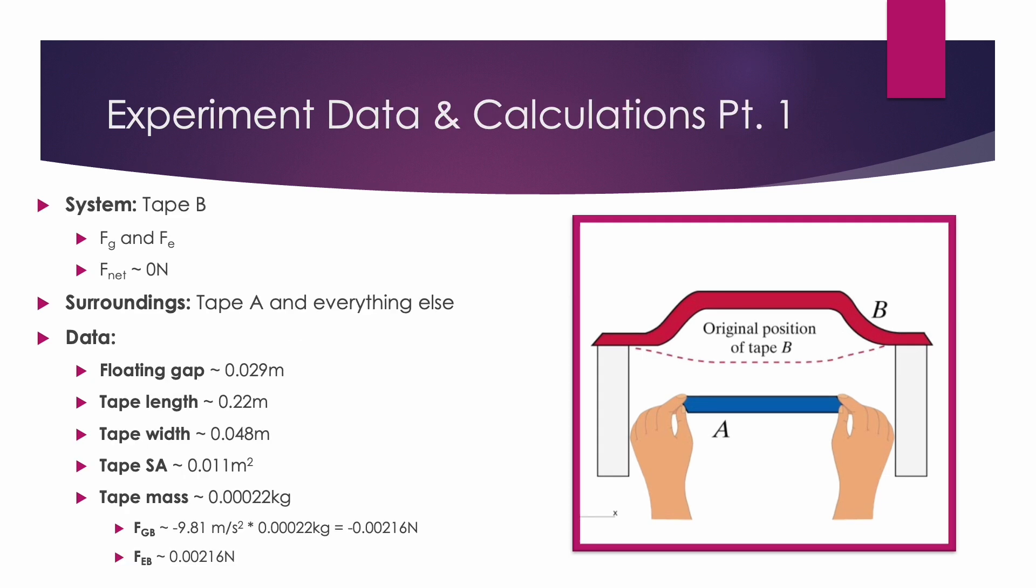Here, our system is the piece of B-tape, and everything else, including tape A, is in the surroundings. We assume that initial conditions for tape B are at rest. We assume that the only forces acting on tape B are the force of gravity and the electric force that tape A exerts on it. And since it's floating and suspended in the air, we can assume that the net force is zero.